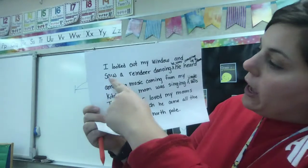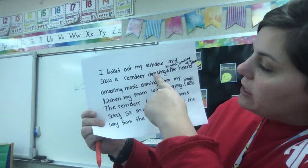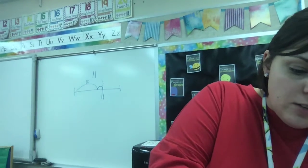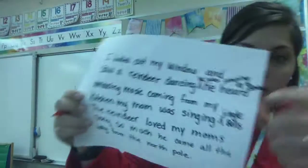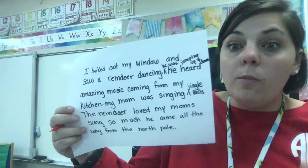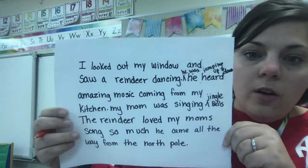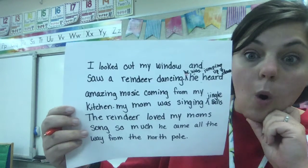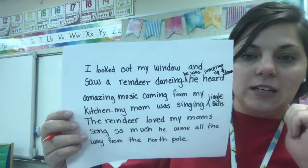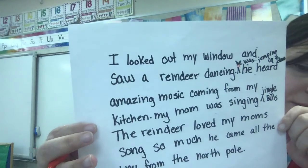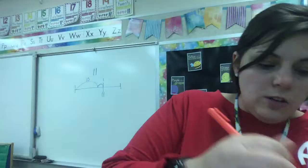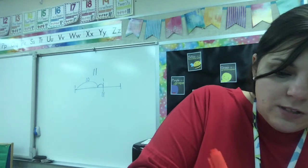I looked out my window and saw a reindeer dancing. Now look, did I capitalize that? Remember I added 'and I said he.' So what I'm going to do is underline that three times so that my brain sees, 'I need to fix that.' He was jumping up and down. He heard amazing music coming. Did you see an error? Look at that other 'he' — is it capitalized? There's a period. He. So I'm going to underline that one too. So there were already two mistakes.